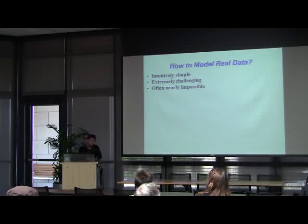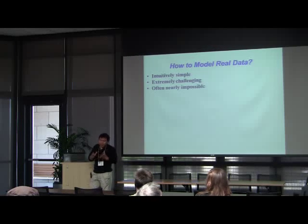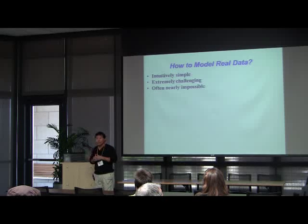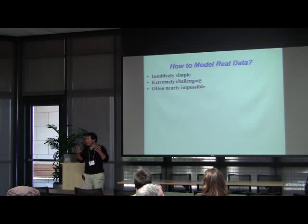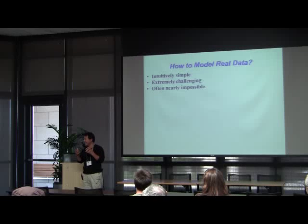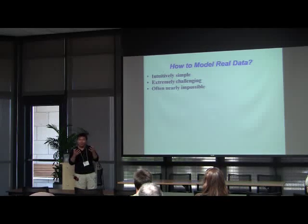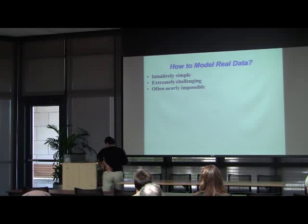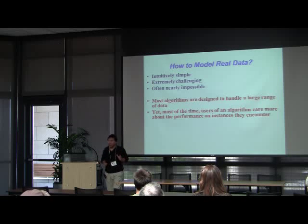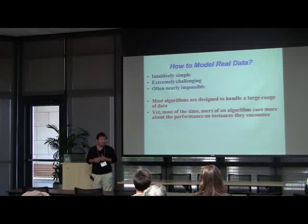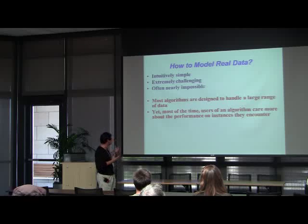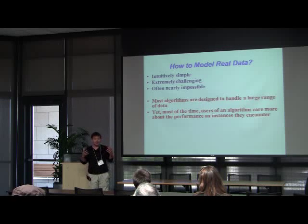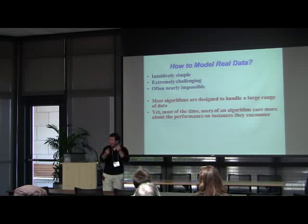One of the main challenges in modeling the practical performance of algorithms is data modeling. How do we model real data? This seemingly simple problem — everybody feels they understand their data — suddenly becomes extremely challenging and often impossible. Part of the reason is that most algorithms are designed to handle many types of data, not just individual pieces. On the other hand, individual users are interested in performance on the data they actually encounter. This discrepancy is often the source of difficulty. Moreover, the distribution or subset of instances occurring is often different from user to user.